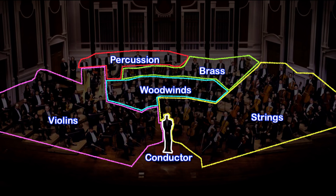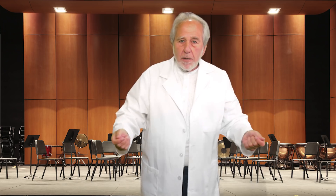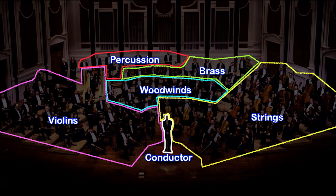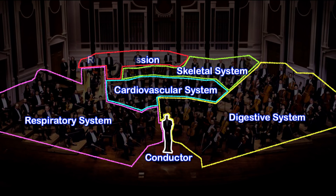In the symphony, we've carved up the orchestra into individual sections that collectively work together to create a fine piece of music. Now, instead of orchestra section names, let's put in the names of the organ systems. Violins represent the respiratory system, strings represent the digestive system, woodwinds represent the heart and cardiovascular system, and so on. Each segment participates to create the music of life.